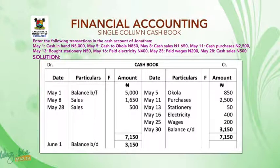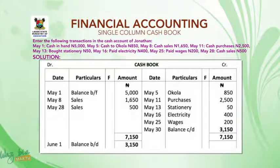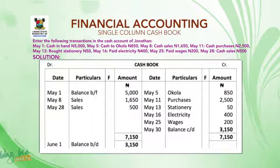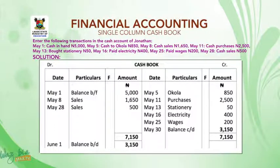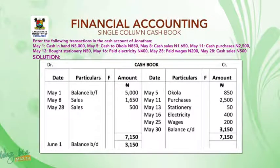May 25, paid wages, 200 naira — those people working for you, you pay their wages, so money goes out as well. On the credit side, under date write May 25; under particulars write 'wages'; and under amount write 200 naira. May 28, cash sales, 500 naira — cash sales means money comes in, so you will debit it. On the debit side, under date write May 28; under particulars write 'sales'; and under amount write 500 naira.